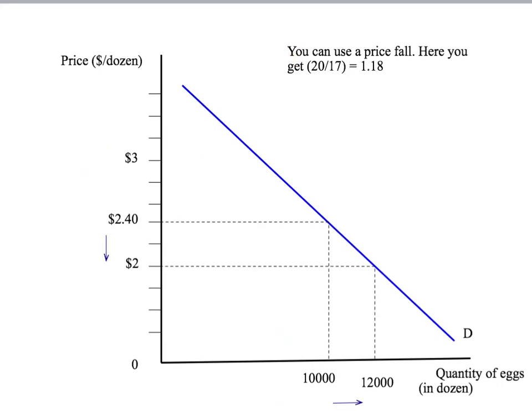Alternatively, starting at $2.40, we can look at a small price decrease of $0.40, or around 17%. That leads to an increase in quantity from 10,000 to 12,000 — an increase of 2,000 or 20%. So our estimate of the own price elasticity is percentage change in quantity, 20, divided by percentage change in price, 17, giving an estimate of negative 1.18.